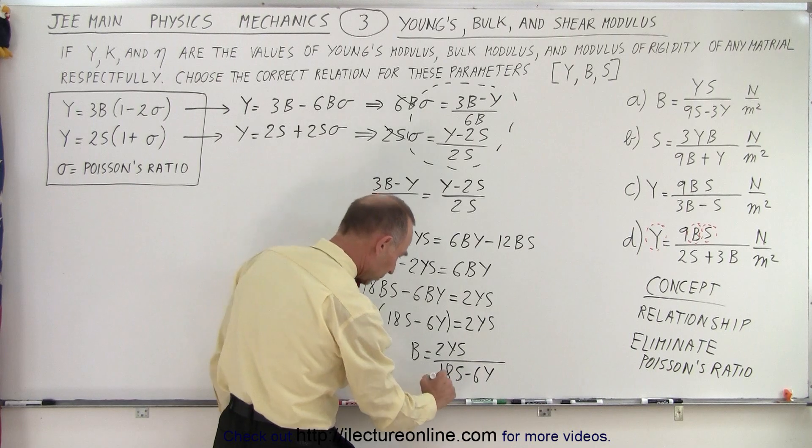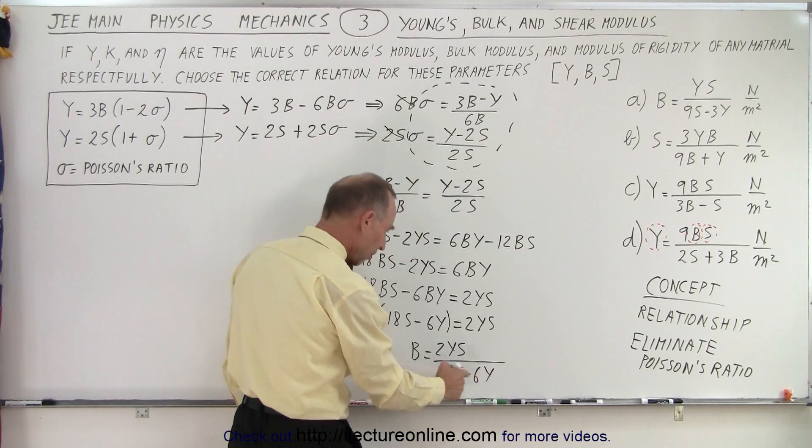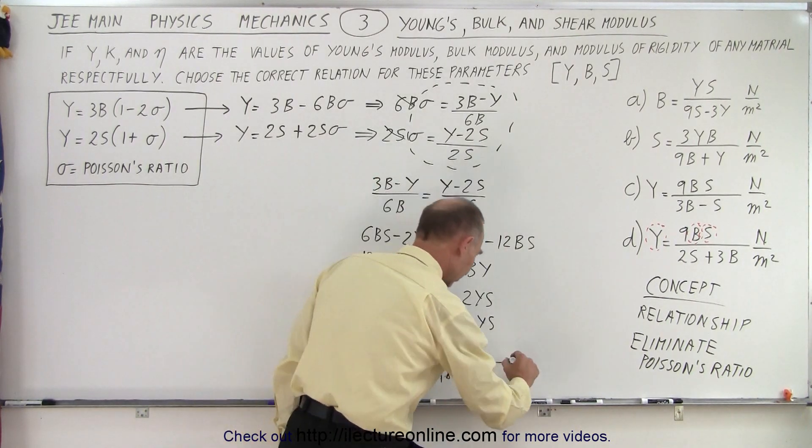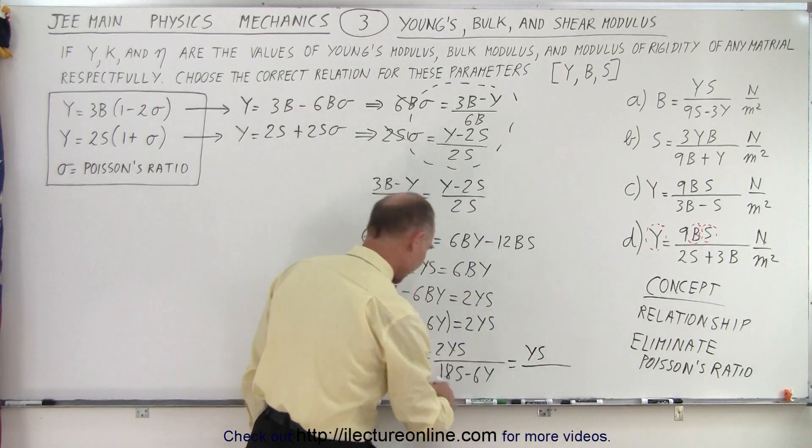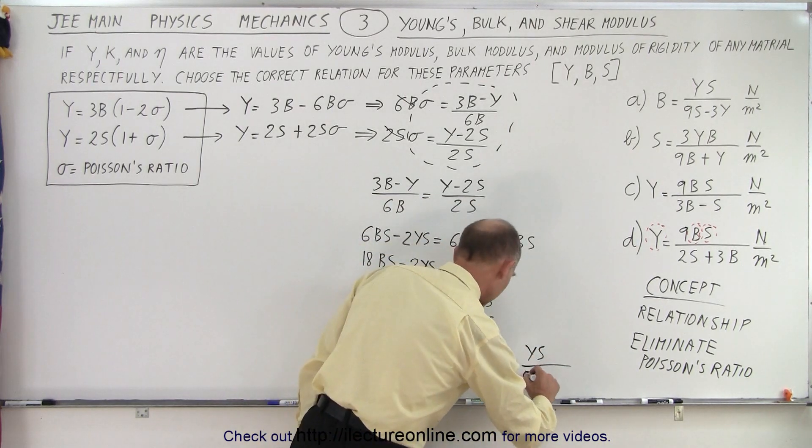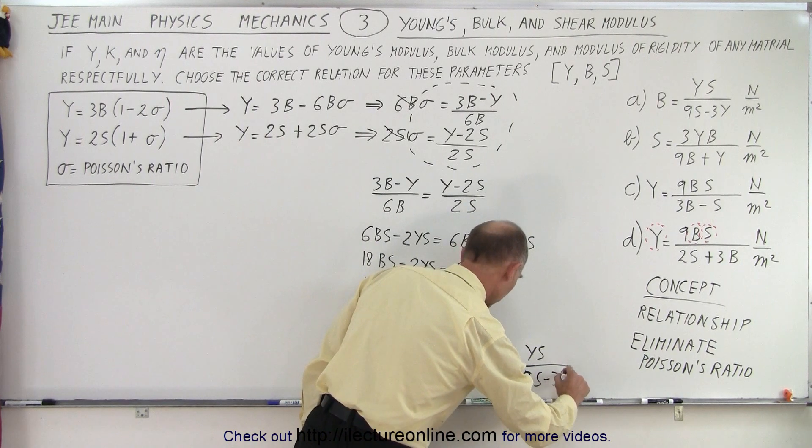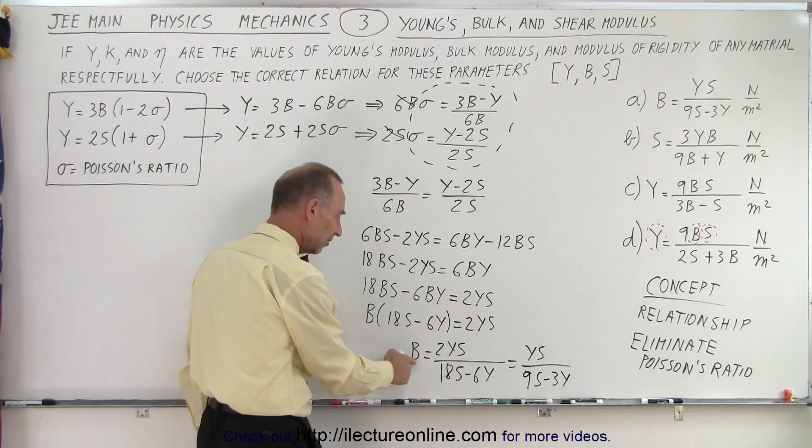And factoring out a 2, that was a 1 and an 8. Factor out a 2 so we can cancel out. So this is equal to YS over, divide the denominator by 2, we get 9S minus 3Y. And so B is equal to that.